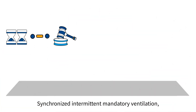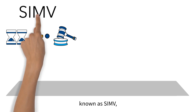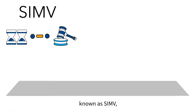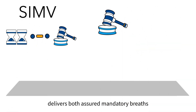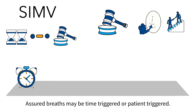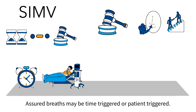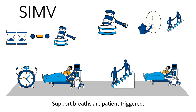Synchronized Intermittent Mandatory Ventilation, known as SIMV, delivers both assured mandatory breaths and spontaneous support breaths. Assured breaths may be time-triggered or patient-triggered. Support breaths are patient-triggered.